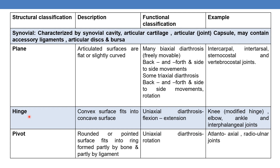The next type of synovial joint is the hinge joint. Here, a convex surface fits into a concave surface. Hinge joints permit uniaxial diarthrosis — specifically flexion and extension. Examples of hinge joints are the knee, elbow, ankle, and interphalangeal joints.